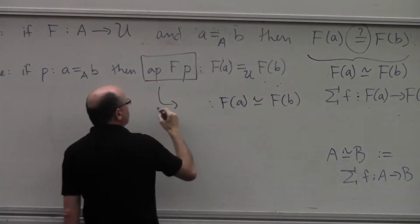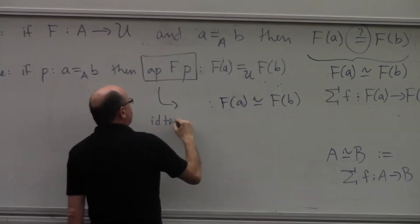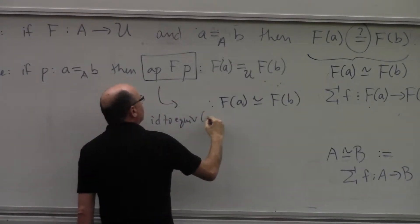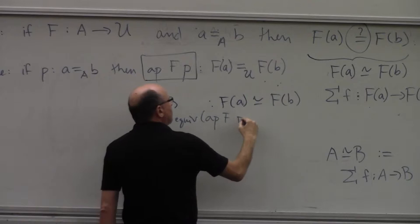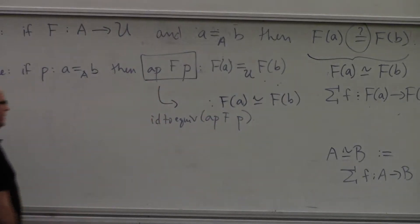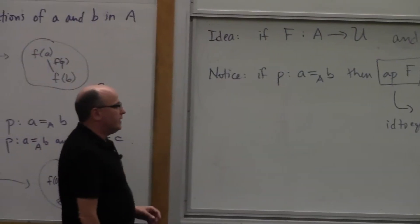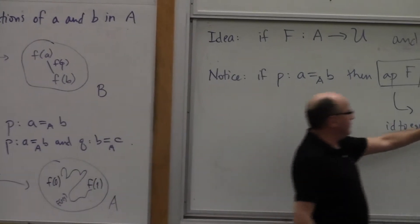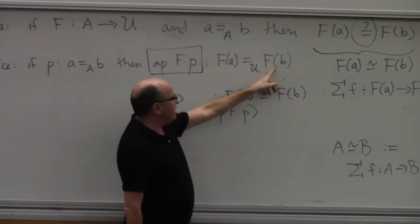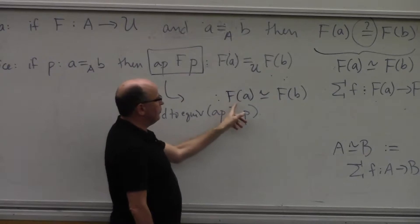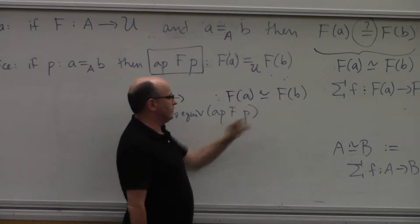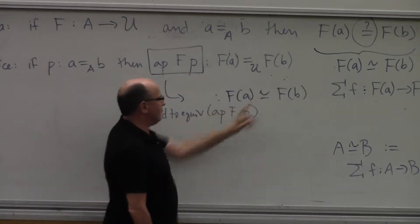And that's called id to equiv. So it will be id to equiv of app fp as an equivalence. That's what we're going to get to. And that way if you have an element of this type, if you know that this has a path between here and here, id to equiv will extract from you a transport function that goes back and forth.